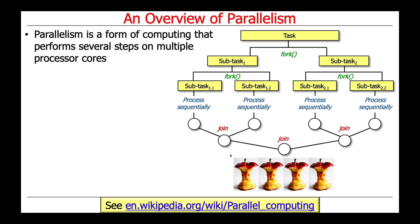Parallelism is a form of computing that performs several steps on multiple processor cores or multiple processors. Back in the day, before we had multi-core processors, we had systems with multiple processors, each with its own core. But for all intents and purposes, it's about the same for both scenarios.